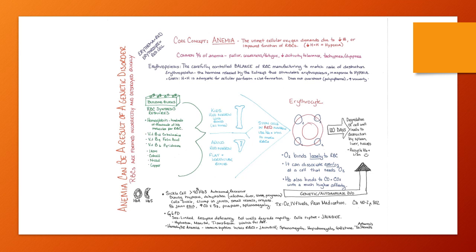G6PD — glucose-6-phosphate dehydrogenase — is a sex-linked enzyme deficiency where the enzyme diminishes as cells age, causing auto-hemolysis — the cells rupture in transit. We see a lot of jaundice. Treatment is hydration to prevent acute kidney injury, mannitol as an osmotic diuretic, and blood transfusion if needed for severe anemia. The goal is to avoid triggers.